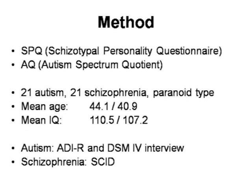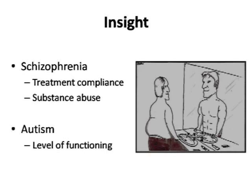We examined 21 adults with autism and 21 adults with schizophrenia of the paranoid type. Mean age was 44 versus 41 with no significant difference, and a high IQ of 110 versus 107. For autism we used the ADIR and the DSM-IV interview, a semi-structured interview examining the criteria of autism. For schizophrenia, we used the SCIT. A difficult thing of using self-reports is problems with insight. In order to have a valid self-report, you have to know yourself, and that depends on theory of mind.